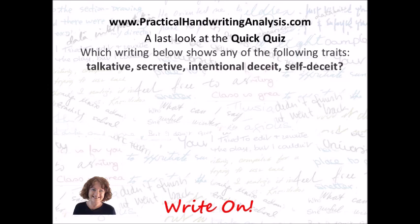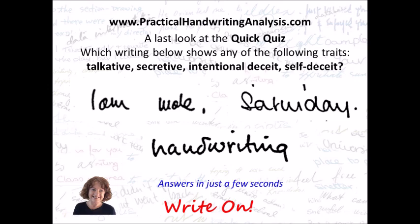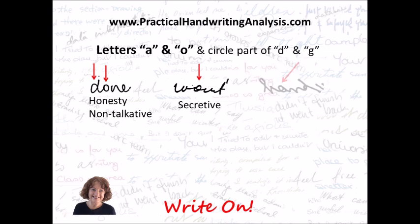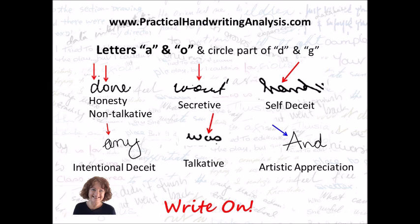Here's a last look at the quick quiz: which writing below shows talkative, secretive, intentional deceit, or self-deceit? To summarize: when circle letters are closed it shows non-talkativeness; no loops or hooks shows honesty; a loop on the right-hand side is secretive; a loop on the left-hand side shows self-deceit; a loop on both sides shows intentional deceit; a circle letter left open is talkative; and a capital letter that is printed shows artistic appreciation.